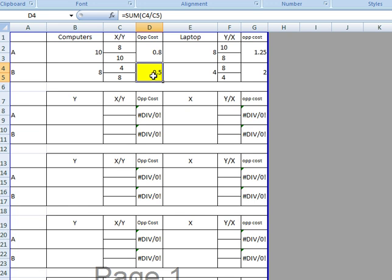But let's look at the laptops. In order to produce four laptops, they have to give up eight computers. So eight computers to make four laptops - eight divided by four, the opportunity cost is two. Whereas here, to create eight laptops you have to give up ten computers, so ten divided by eight, the opportunity cost is 1.25.